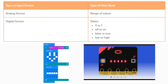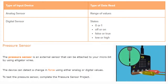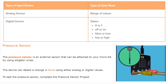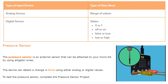Our pressure sensor is known as an external sensor. It can be attached to our micro:bit using alligator wires, also known as alligator clips. The clips allow us to connect to those GPIO pins on the bottom of the micro:bit. This device can detect a change in force using either analog or digital values. We're going to be using a digital value for our pressure sensor, meaning it's either pressed or not pressed — true or false, one or zero.